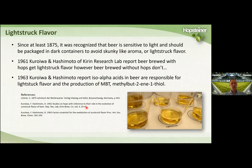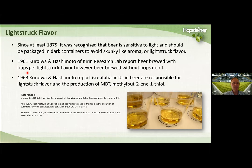Now I'll talk about light struck flavor. For the longest time, brewers knew there was something in beer that caused it to be light struck — to get skunky. The first written reference was in 1875, where a German researcher said beer is sensitive to light and should be packaged in dark containers to avoid skunky-like aroma, using the term 'light struck flavor.' But it wasn't until fairly recently — in 1961, researchers at Curen Brewery found that beer brewed with hops got light struck flavor, while beer brewed without hops didn't. Within a couple of years they determined it was the iso-alpha acids in the beer responsible for the light struck character.